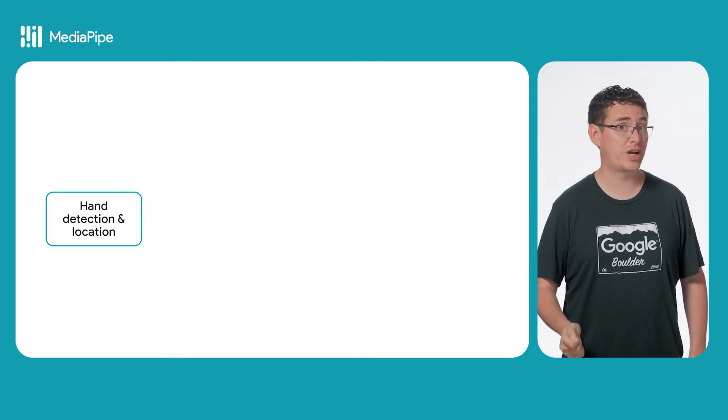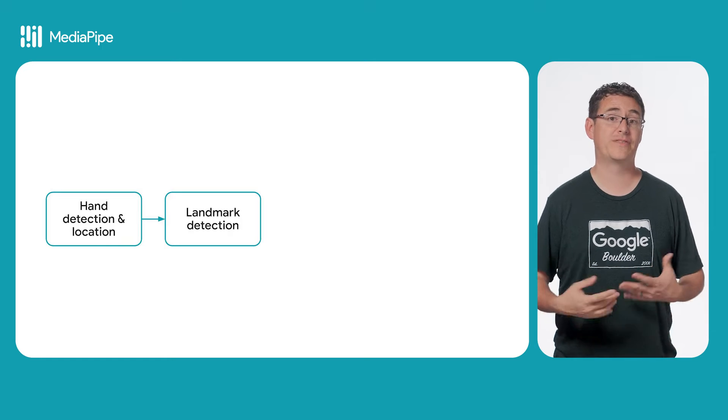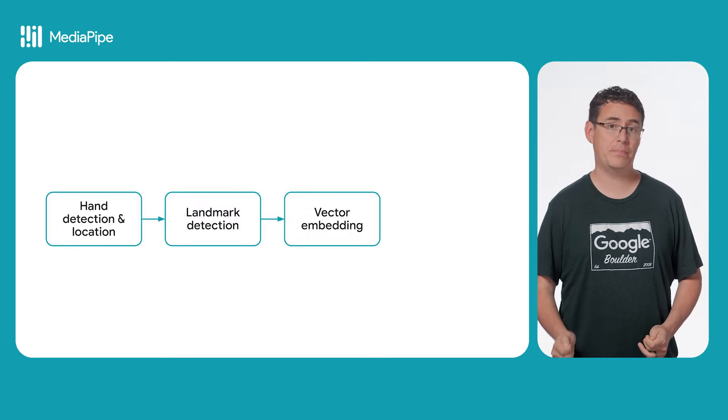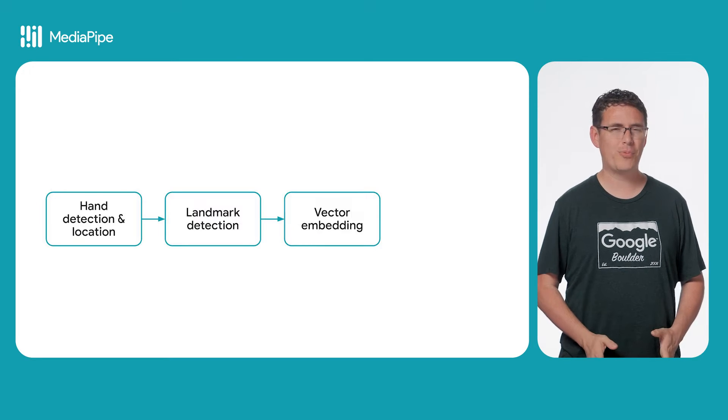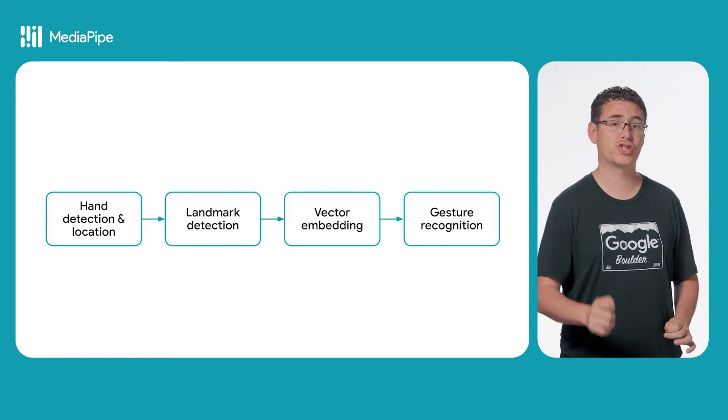Like some of our other tasks, gesture recognition is implemented through MediaPipe using a bundle containing multiple models. Because of the way MediaPipe Tasks is designed, these models can be chained together to do even more complex operations. Gesture recognition consists of four separate models: the first detects the presence and location of a hand; the second finds specific landmarks on the hand, such as fingertips and various joints; the third does vector embedding, where it tries to match those landmarks up to different patterns and numerical values; and the fourth performs the primary step of determining the gesture.